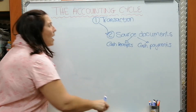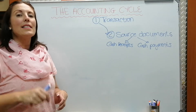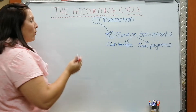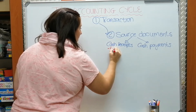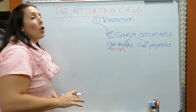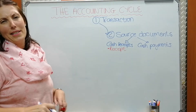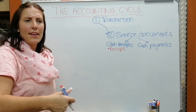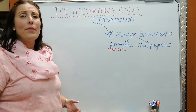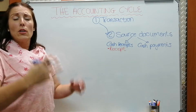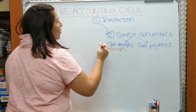When our business receives money, we issue a receipt. Our source document will be the duplicate receipt, since the original goes to the client. For example, when somebody pays rent for part of our building, we issue them a receipt. You can also use a receipt if you have a very small business without a till or cash register.